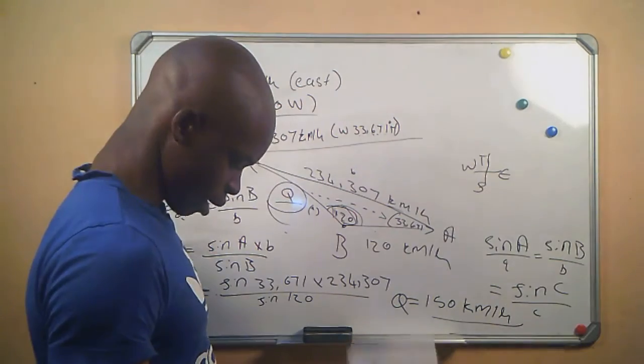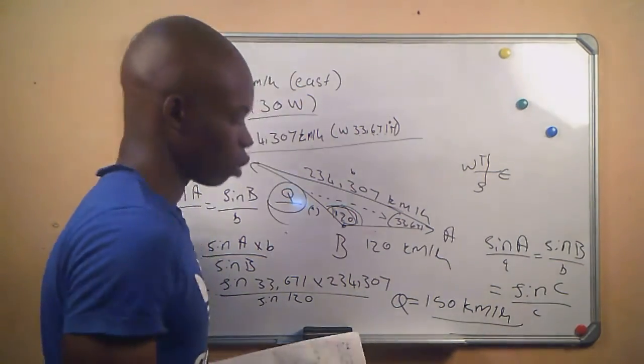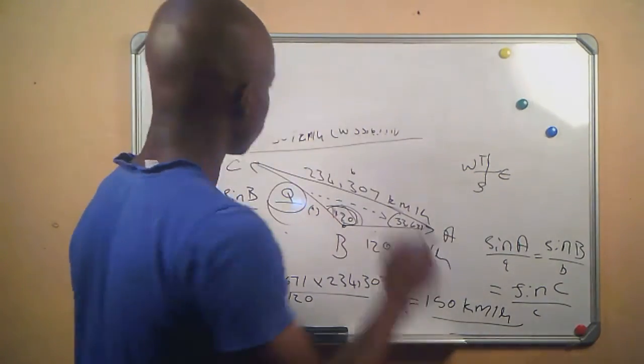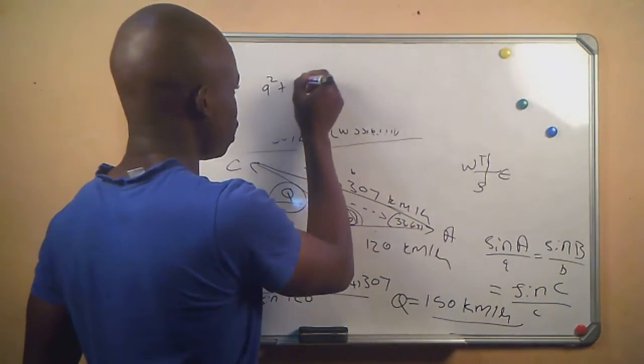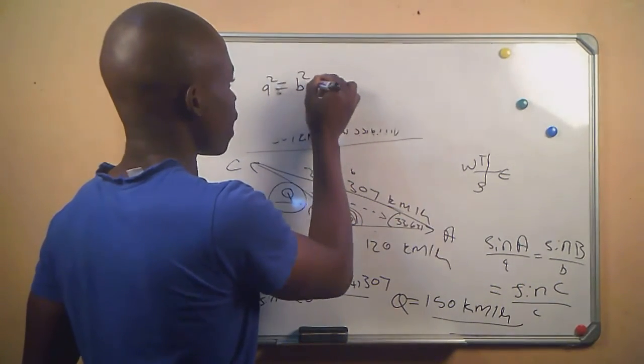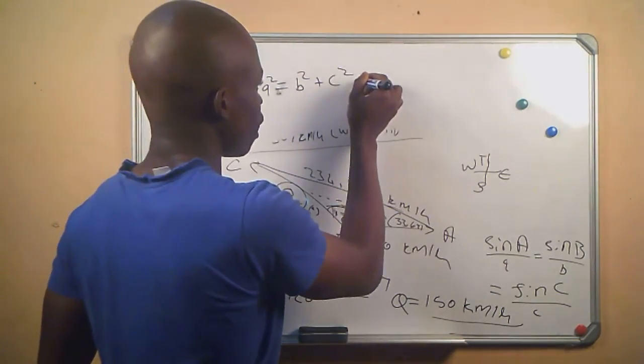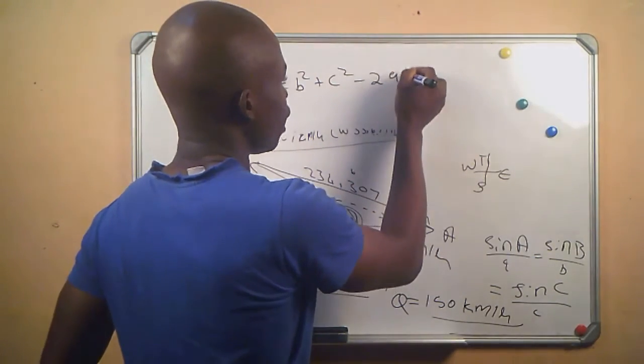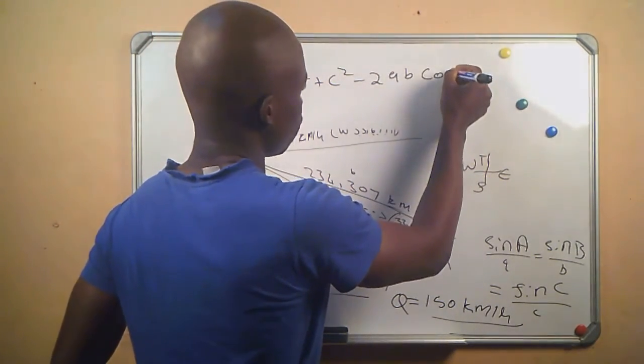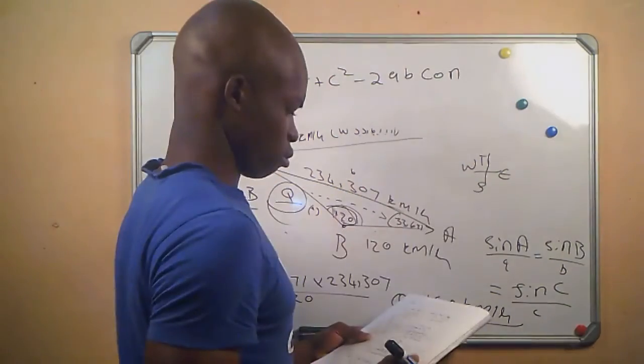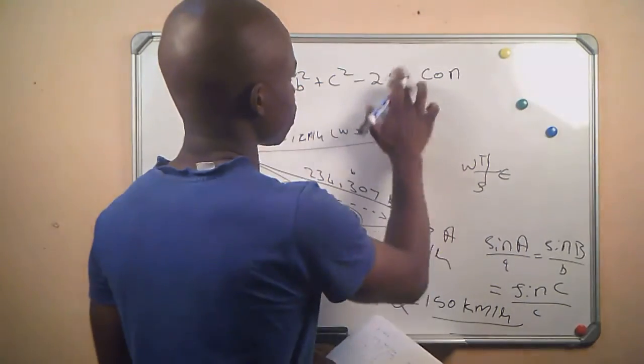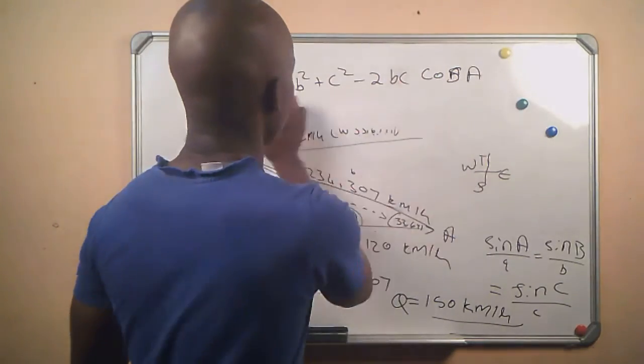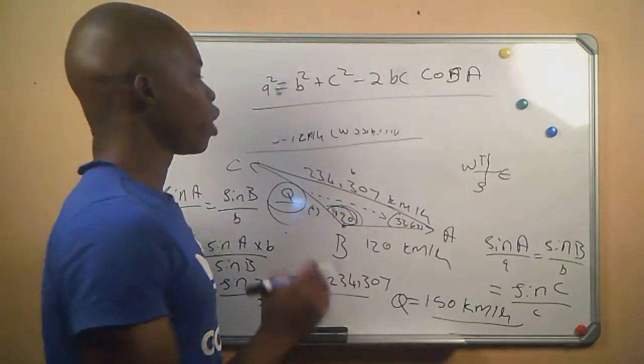So one thing, another thing that you have to remember is the cosine rule. And then this is our cosine rule. It says a squared is equal to b squared plus c squared minus 2bc cos A. So this is our cosine rule.